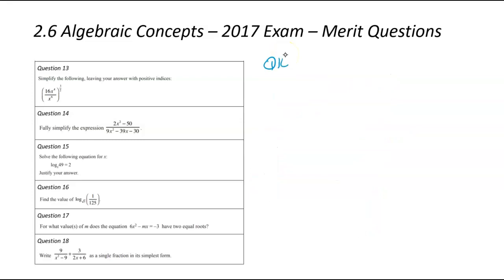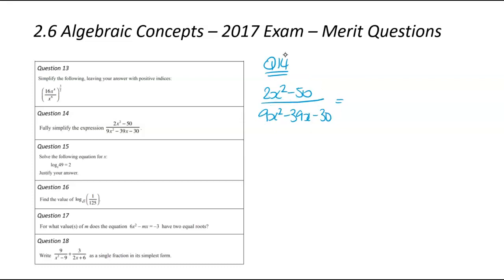We are now looking at question number 14. We've got this big messy expression — we've been asked to simplify it. So 2x squared minus 50, all of that divided by 9x squared minus 39x minus 30. The first thing to note: I'm seeing a lot of common factors. Up the top there's a 2 in common, down the bottom there's a 3 in common. I'm going to start by taking out those common factors.